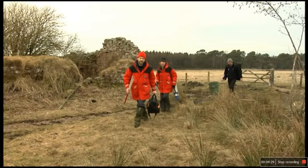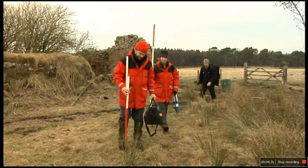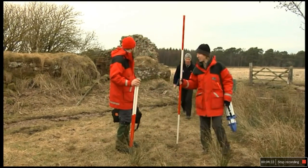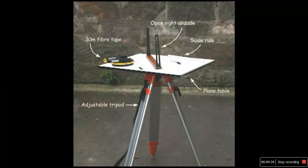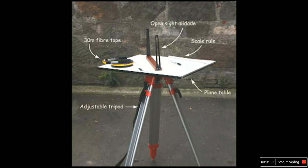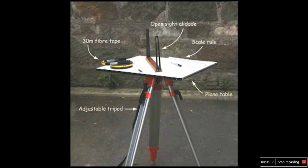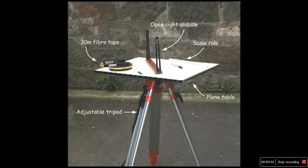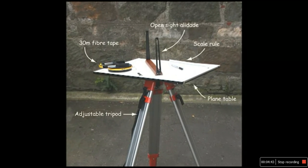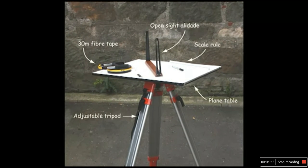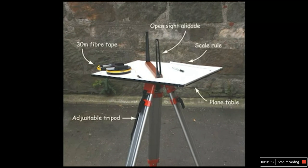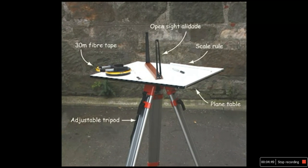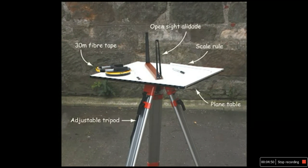Once you've decided on your survey strategy, it's time to get the equipment out. A plane table is a drawing board placed on a tripod and used with a sighting device called an alidate to create a scale drawing of a site. A piece of polyester drafting film is taped onto the drawing board with masking tape. You'll need a tape measure and a scale ruler to measure the features and create your scale drawing.